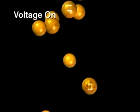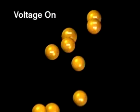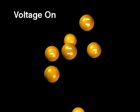When a voltage is applied, the droplets that have a negative charge will fall more slowly, stop falling, or even rise, depending on the number of charges on them.